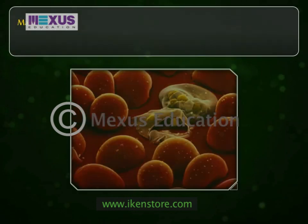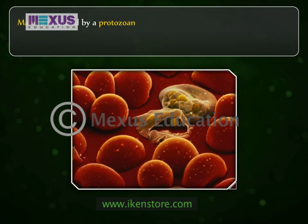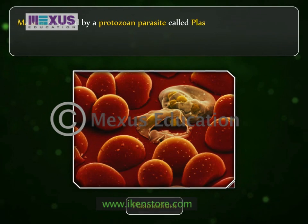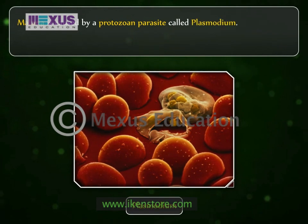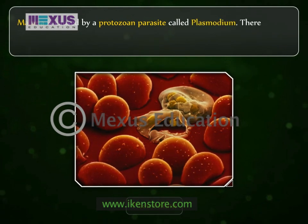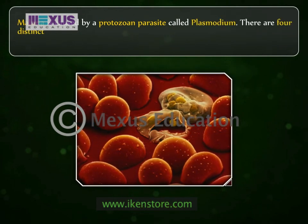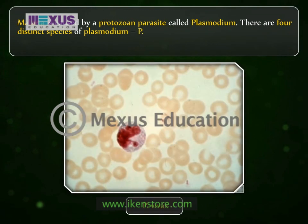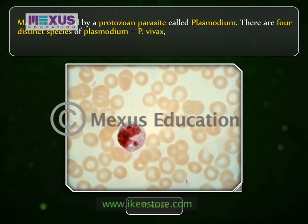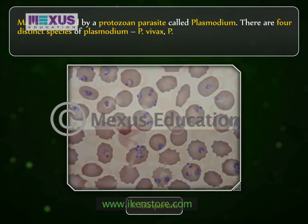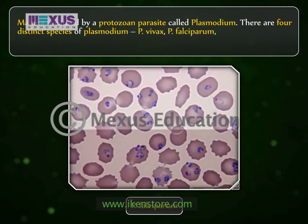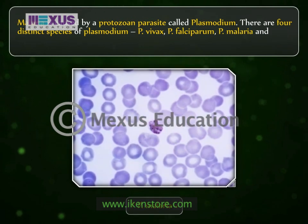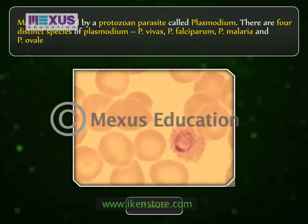Malaria is caused by a protozoan parasite called Plasmodium. There are four distinct species of Plasmodium: P. vivax, P. falciparum, P. malariae, and P. ovale.